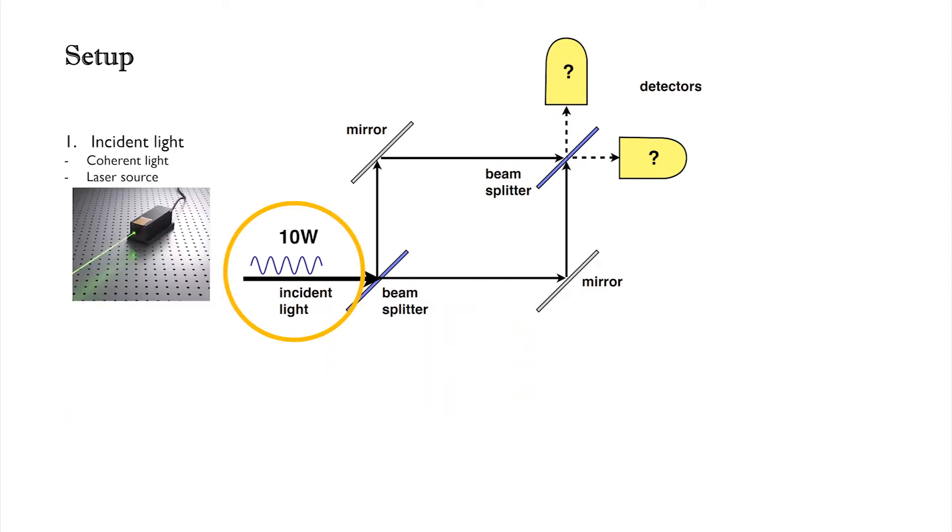An incident light, for example, a laser beam, which produces a coherent light source.